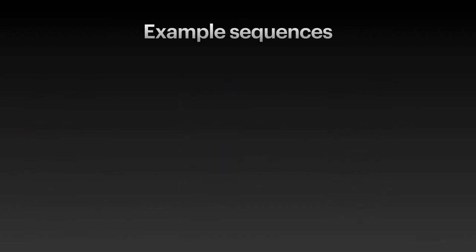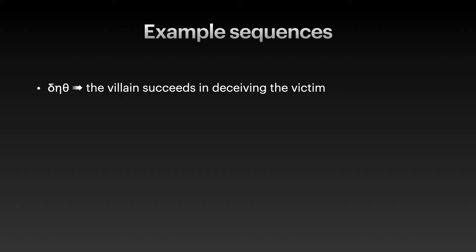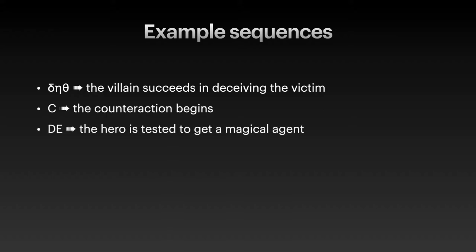Let's take an example sequence and see what kind of structure it represents. The first part of the sequence is delta eta theta. In this introduction, the villain of the story succeeds in deceiving the victim of the story. The next part of the sequence is C, belonging to the body of the story — here a counteraction begins and the hero begins her search for the villain. The next part is D, E, the beginning of the donor sequence, where the hero is tested to find out whether she is worthy of receiving a magical agent.